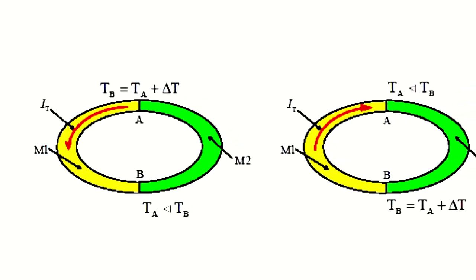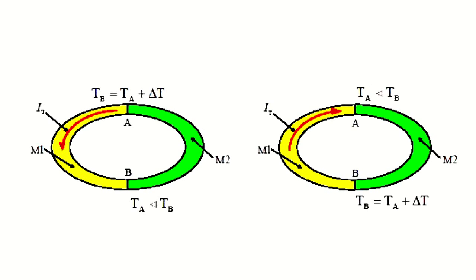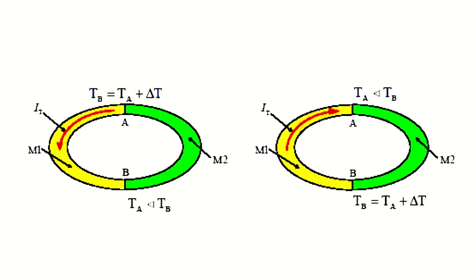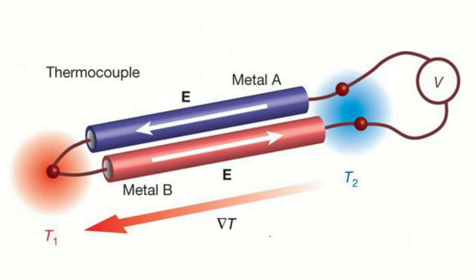At various temperatures of junctions in a closed circuit, a current called thermoelectric is generated, and the reversal of sign of the solder joint temperature difference is accompanied by a change in direction of the thermoelectric current. The value of thermo-EMF depends only on the temperature of the hot junction T1 and cold junction T2, and on the material of the conductors. The dependence of thermo-EMF on temperature is determined by the following formulas.